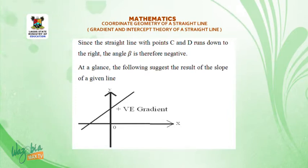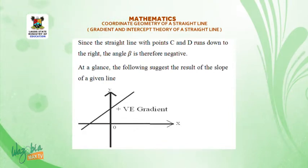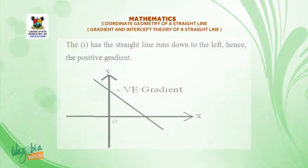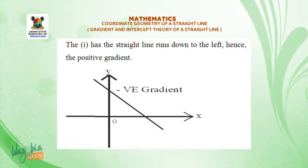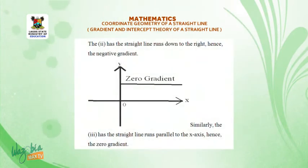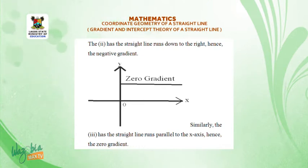At a glance, the following diagram suggests the result of the slope of a given line. Roman numeral one: the straight line runs down to the left, hence a positive gradient. Roman numeral two: negative gradient. Roman numeral three: a line runs parallel to the x-axis, hence zero gradient.